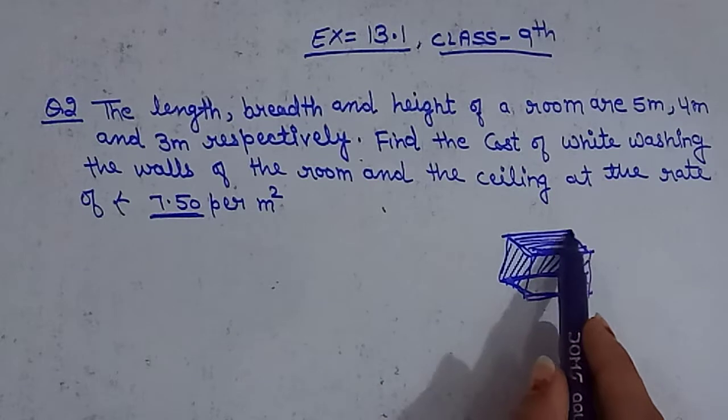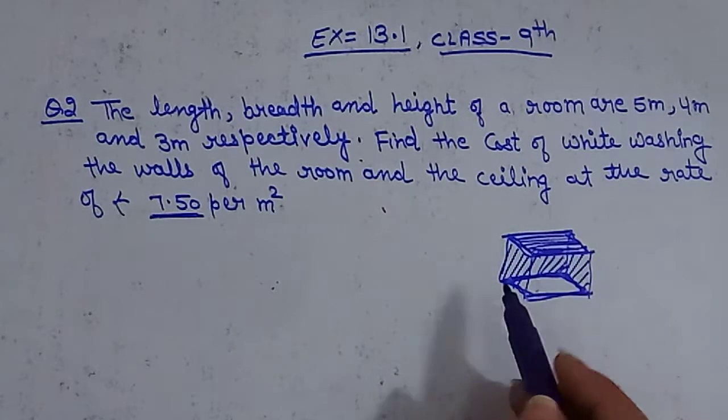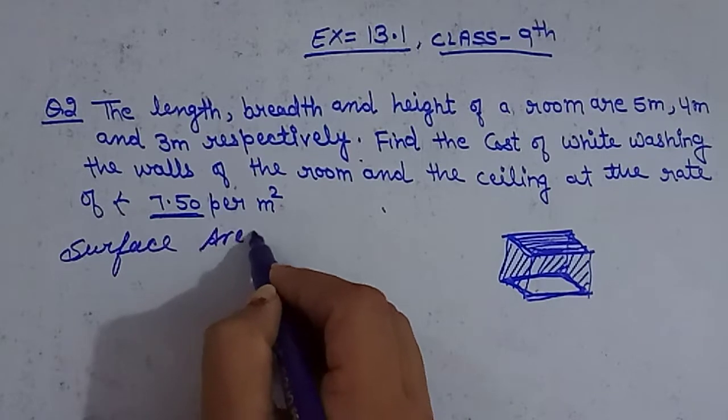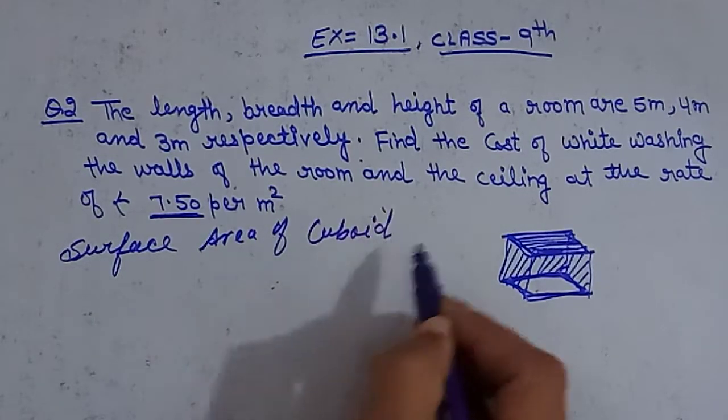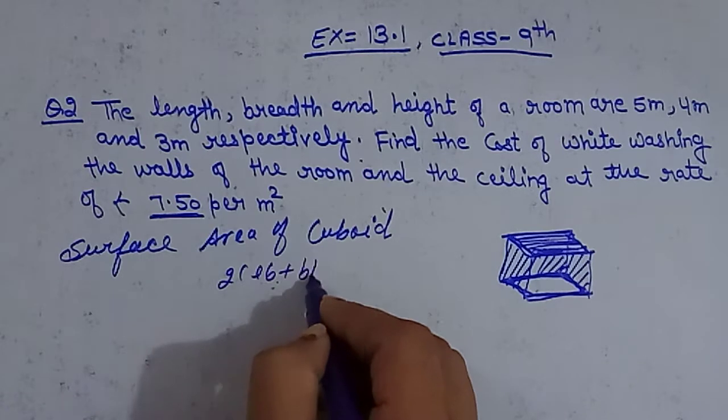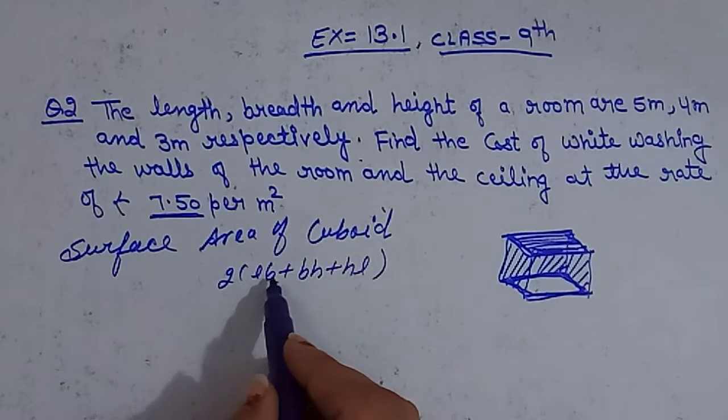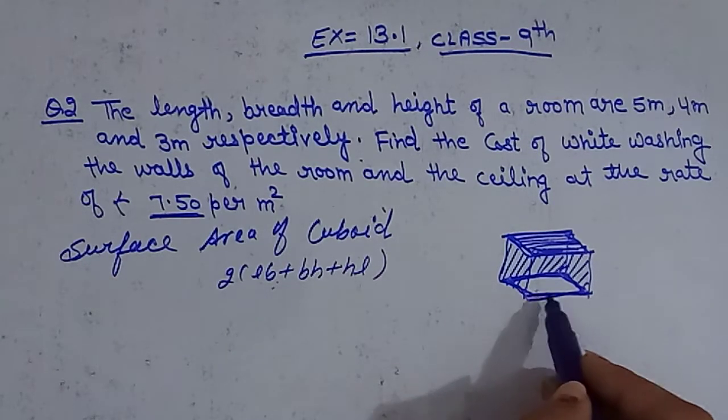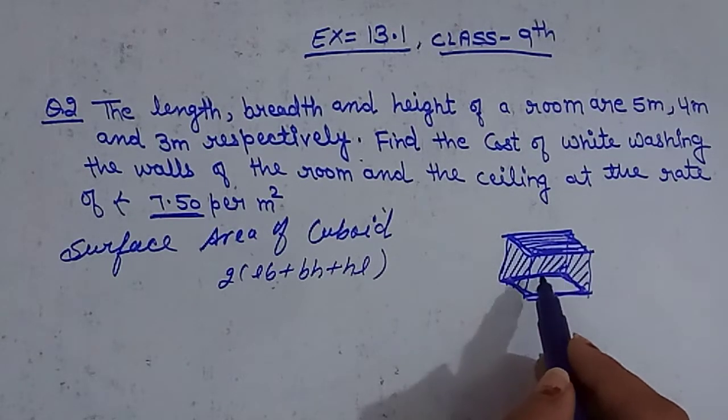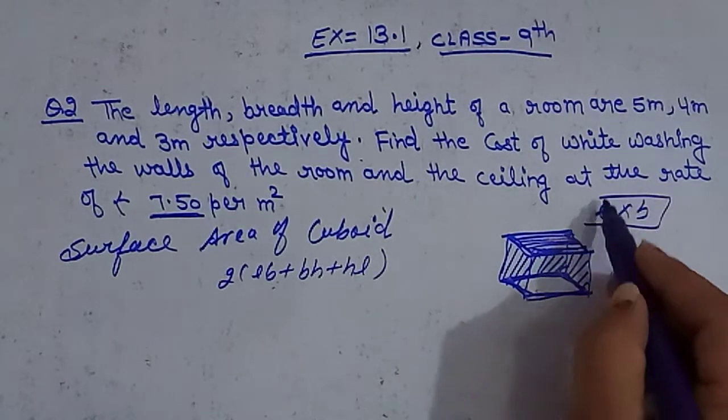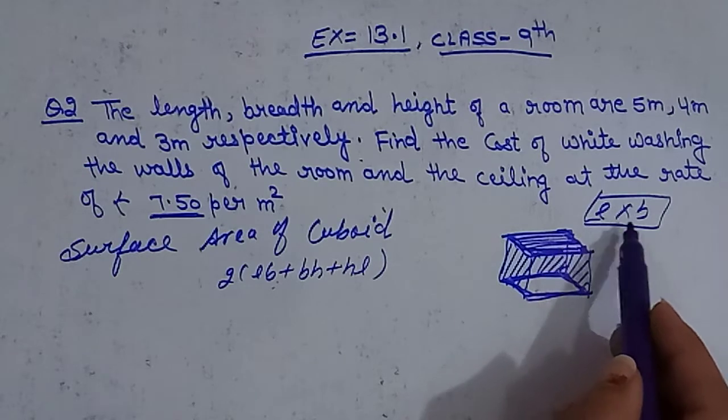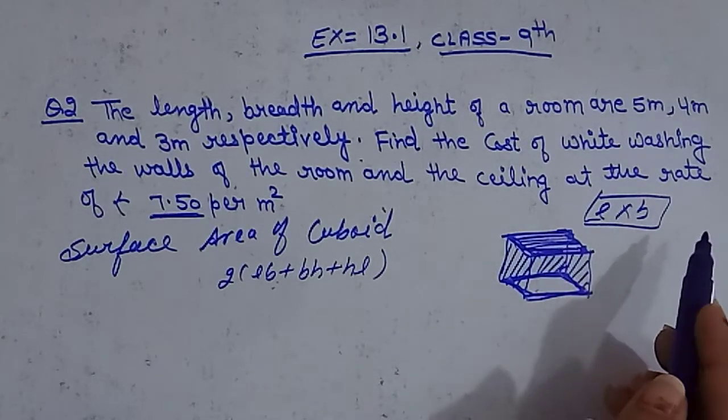Surface area of cuboid. Now, the ceiling or roof is excluded from the bottom. The length and breadth form a rectangle. The area of a rectangle is length into breadth.